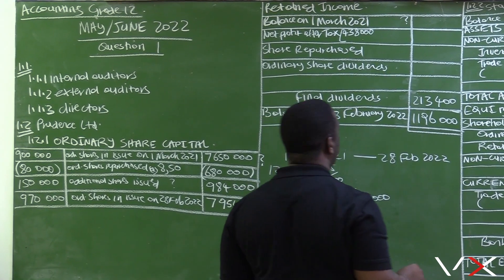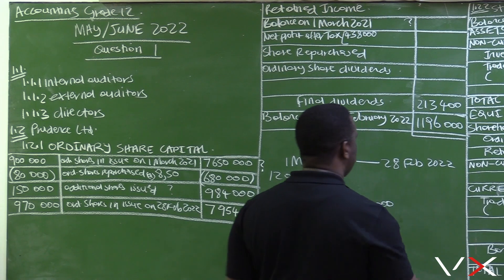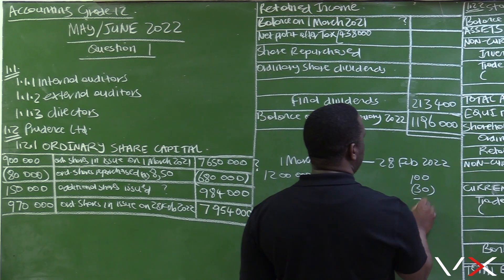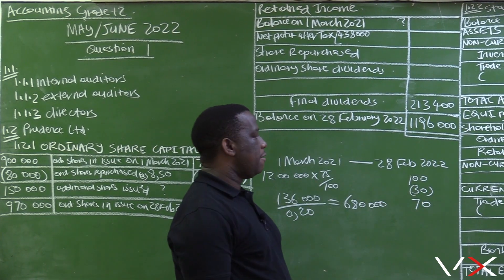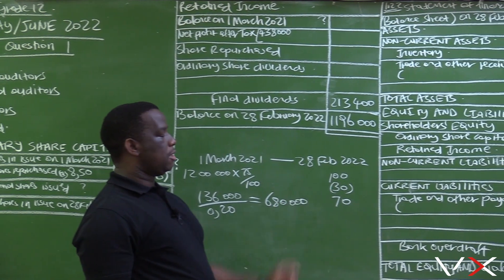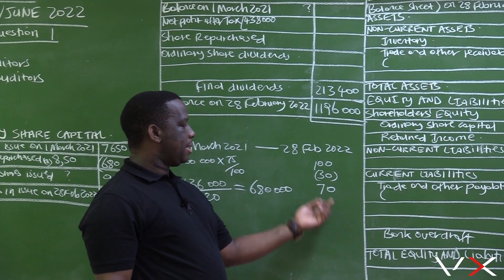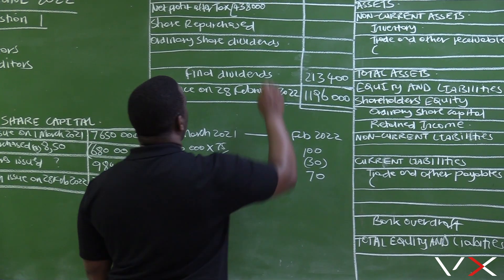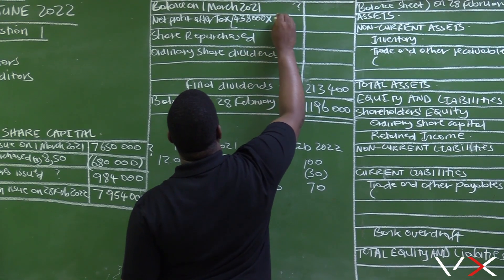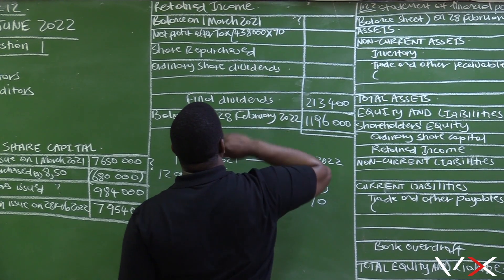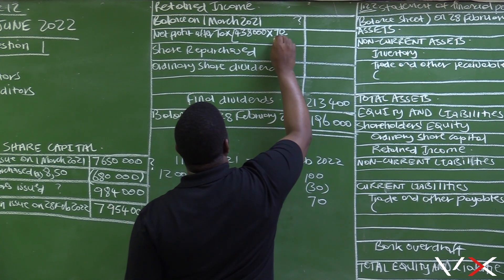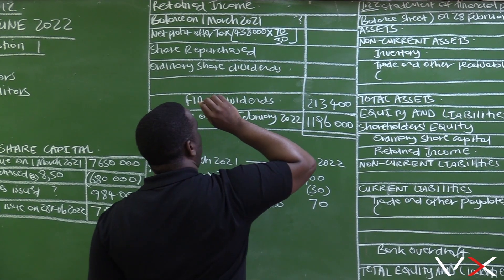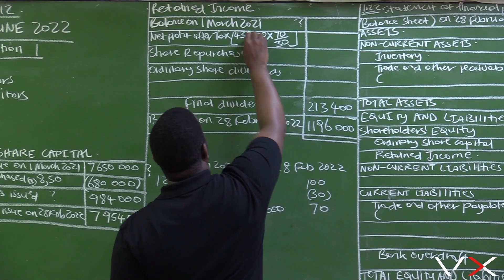We know that the net profit before tax is 100%, and if tax is 30%, then the net profit after tax will be 70%. We are looking for the net profit after tax, so 438,000 must be multiplied by 70 and divided by 30 — you multiply by the percentage of the amount that you want.